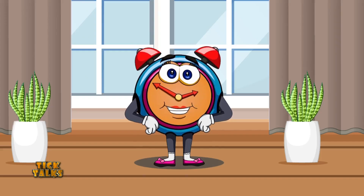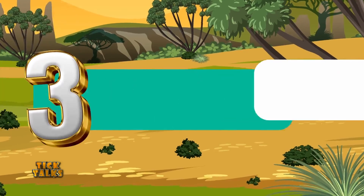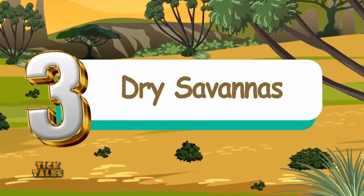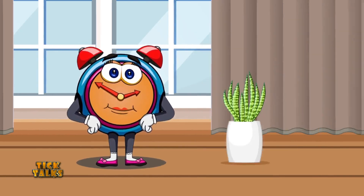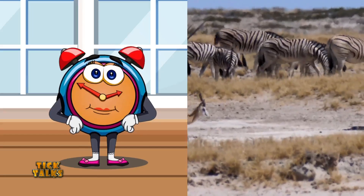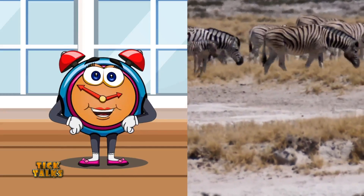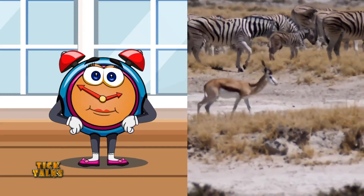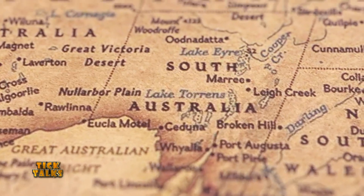Number three — dry savannahs. They are usually located in arid regions with low annual rainfall. The vegetation in dry savannahs is adapted to drought conditions, often dominated by drought-resistant grasses and scattered shrubs or trees. Dry savannahs are common in parts of India, Australia, and Africa.